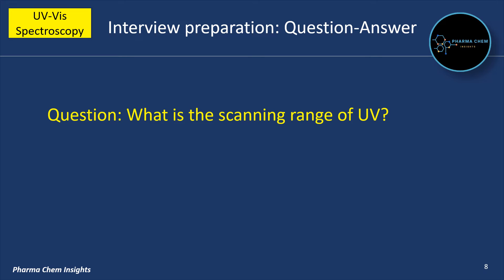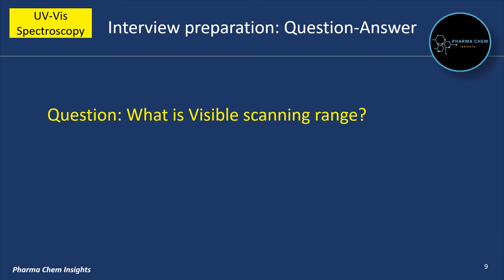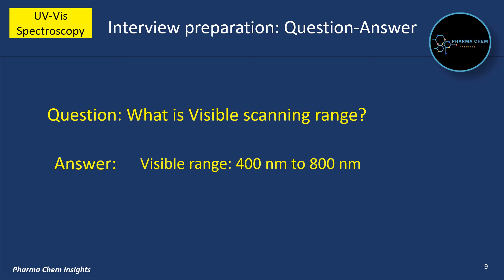What is the scanning range of UV? The scanning range of UV is 200 nm to 400 nm. What is the visible scanning range? The visible scanning range is 400 nm to 800 nm.